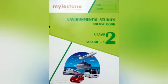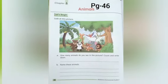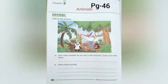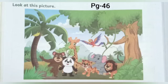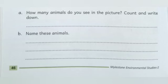So let's move to the book. Open page number 46. Let's begin. Look at this picture. There are many animals in the picture. Read question number 1: How many animals do you see in the picture? Count and write down. There are 7 animals in the picture.